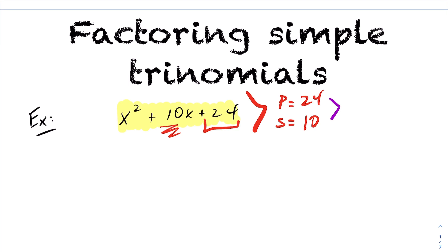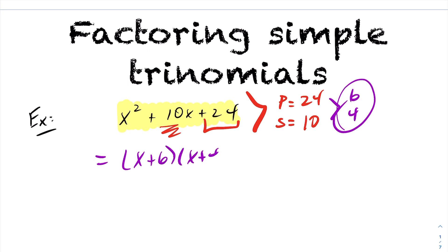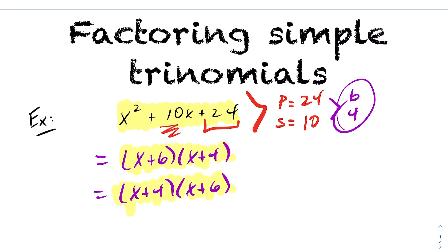Pause the video and try to find these numbers yourself. Hopefully you were able to find 6 and 4: 6 times 4 is 24, and 6 plus 4 is 10. Once you find the two numbers, you just put them in the brackets. So this becomes x plus 6 times x plus 4. You could also write it as x plus 4 times x plus 6 — multiplication is commutative, so order doesn't matter.